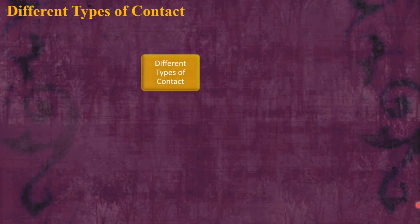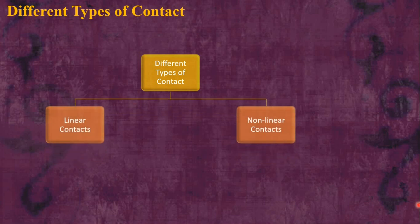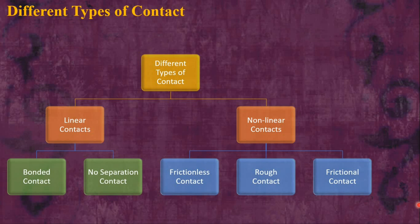Now let's discuss the different types of contact. There are two major types: linear contacts and non-linear contacts. These are further subdivided into five types. Linear contacts are divided into bonded and no separation, while non-linear contacts are divided into frictional, rough, and frictionless contact.